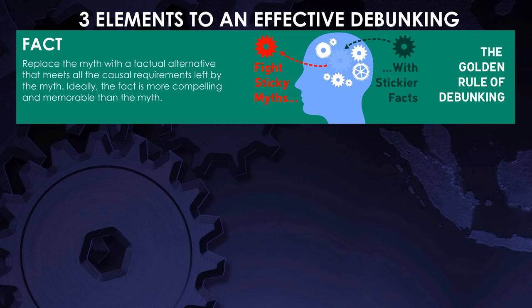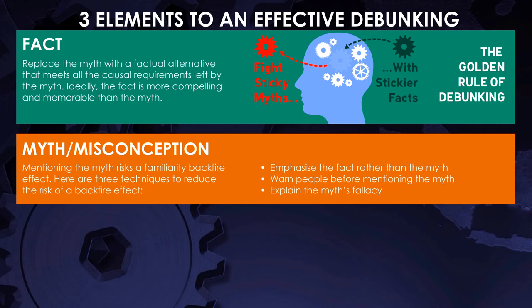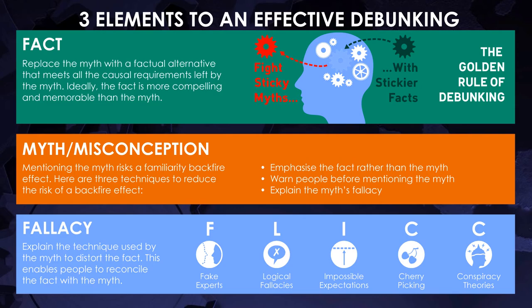There are three elements in an effective debunking. Always start with the fact to make this the first thing people hear or read. Next, mention the misinformation, but precede it with the warning that what comes next is wrong. Finally, explain the fallacy inherent in the misconception.